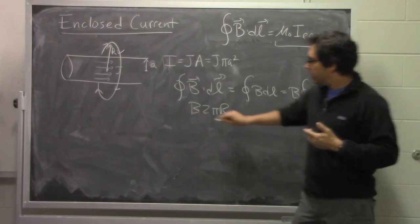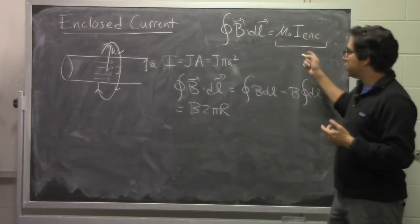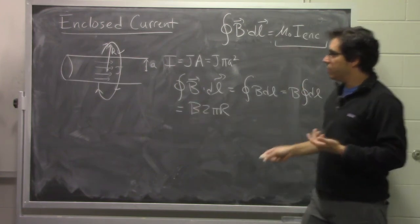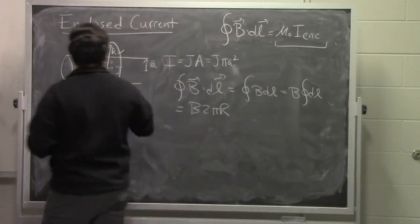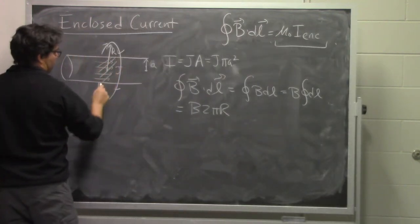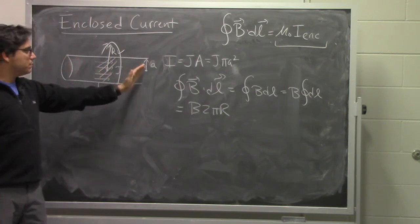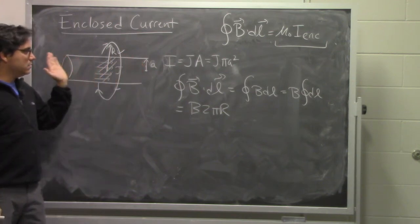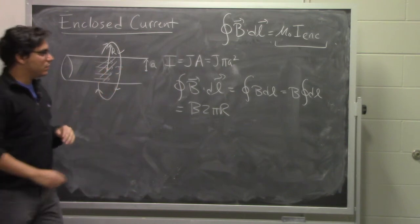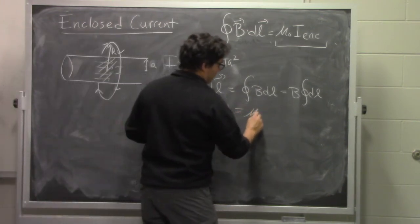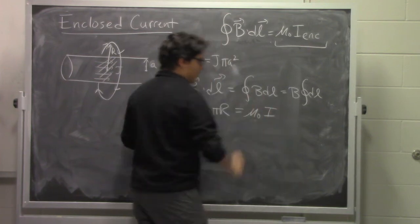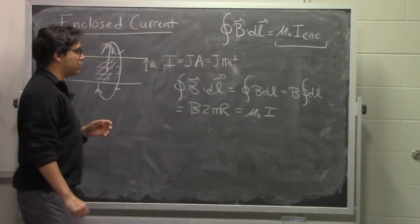Now, the right-hand side of this equation is how much current have we enclosed times mu nought? Well, in this case, we have enclosed exactly the total amount of current that is passing through the entire wire. And so the right-hand side of this equation is exactly mu nought times whatever the current is that is running through that wire.